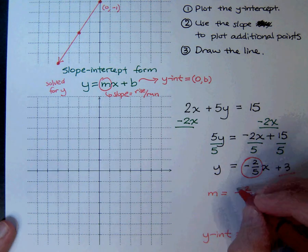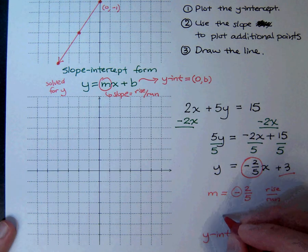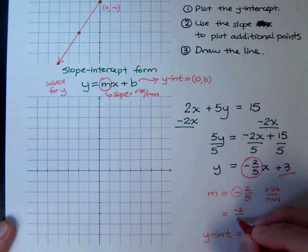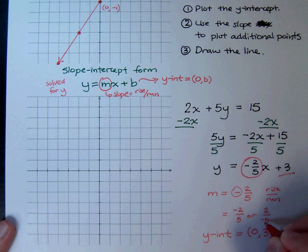Now, you only have one negative, so you can look at it this way. You can look at it as negative 2 over 5, or you can look at that as 2 over negative 5. One or the other. You don't have two negatives.